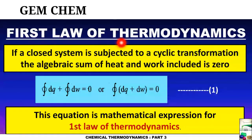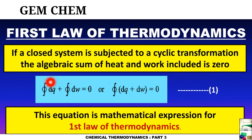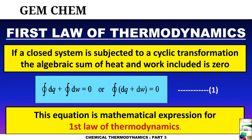The first law of thermodynamics states that energy can neither be created nor destroyed. In mathematical terms, if a closed system is subjected to a cyclic transformation, the algebraic sum of heat and work is zero. This is expressed as the cyclic integral of dq plus the cyclic integral of dw equals zero, or together as the cyclic integral of (dq + dw) = 0.